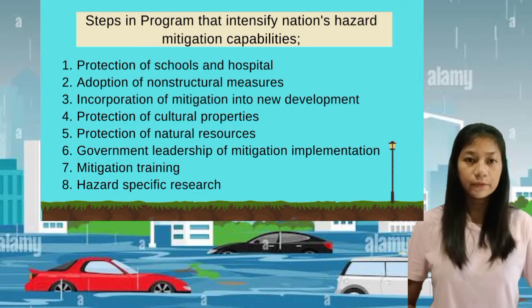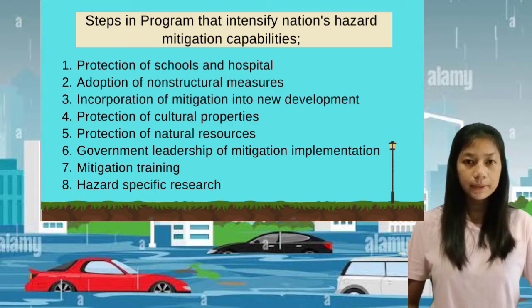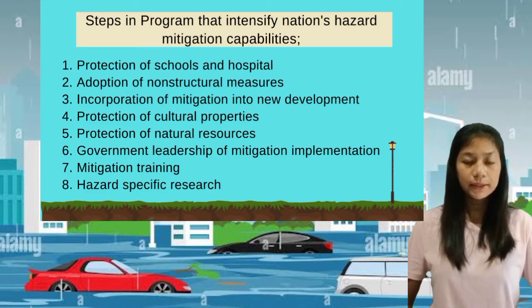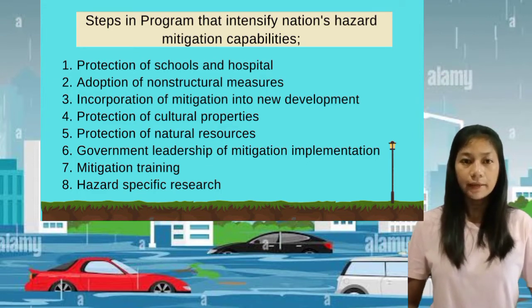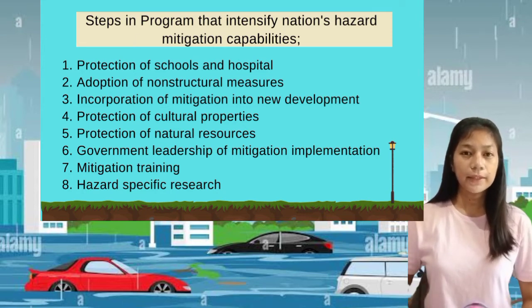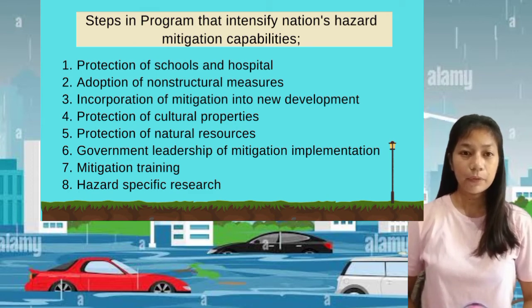Here are steps that intensify hazard mitigation capabilities. First, protection of schools and hospitals — all schools and hospitals should be located and constructed so the government ensures there are no hazard areas, or special conditions are made to reduce damage when natural hazards occur. Number two, adoption of non-structural measures — an approach to disaster management. There are two ways in approaching disaster management: non-structural and structural. Non-structural measures do not involve any physical construction.